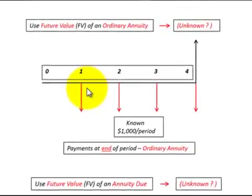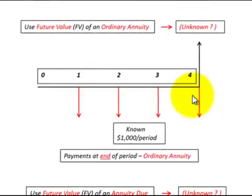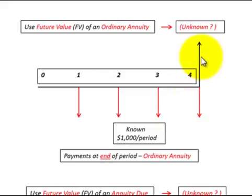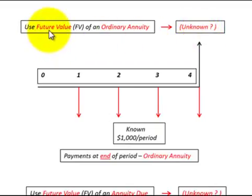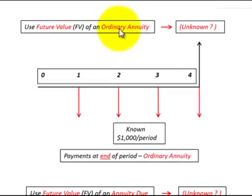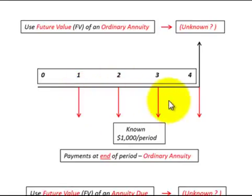In this cash flow diagram, we have four equal payments each at the end of each period, and we want to determine what their future value is — that's the unknown amount. In this case, we'd use the future value of an ordinary annuity. Remember, ordinary annuity means the payments are at the end of each period.